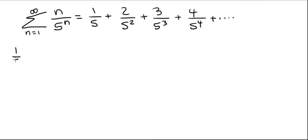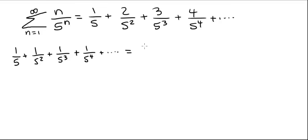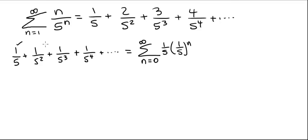The first series is 1/5 plus 1 over 5 squared plus 1 over 5 cubed plus 1 over 5 to the 4th and so on. We can write this as the summation from n equals 0 to infinity of 1 over 5 times 1 over 5 to the n. Let's briefly check: when n is 0 we have 1/5; when n is 1, 1/5 times 1/5 is 1 over 5 squared; when n is 2, 1/5 times 1 over 5 squared is 1 over 5 cubed, and so on.